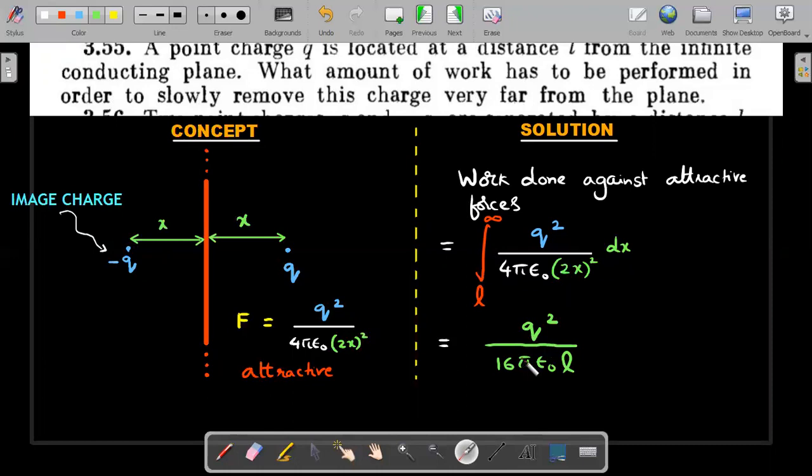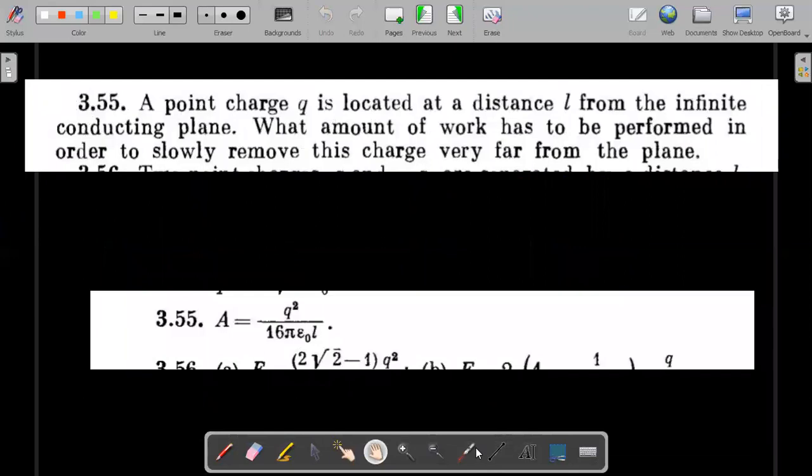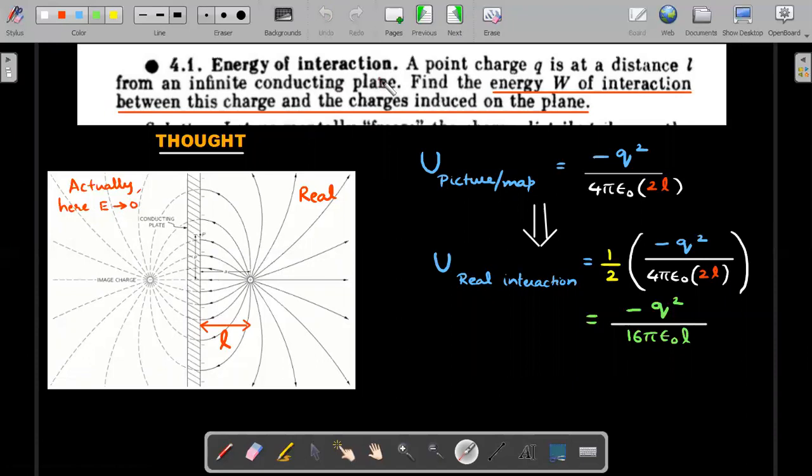Let's check the answer given in the problem book. This is the answer from the textbook itself. It matches the value we got: q²/(16πε₀L). We've solved it according to the textbook and most probably used the correct concept.